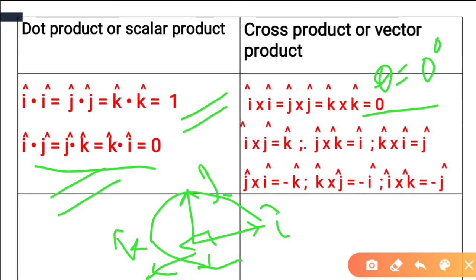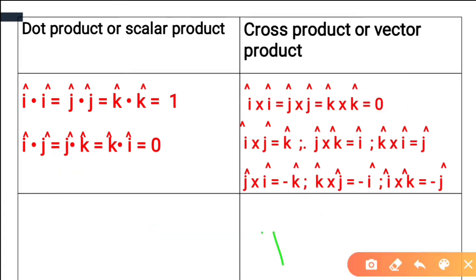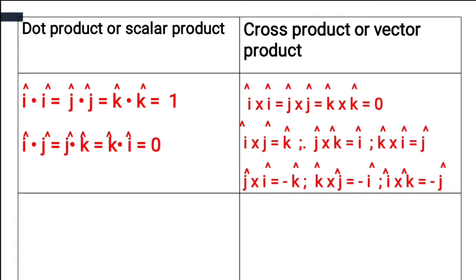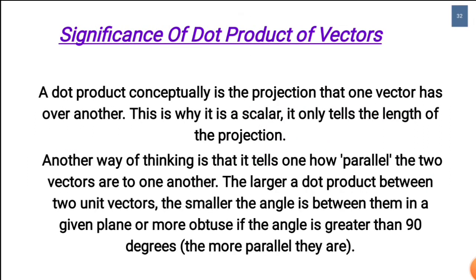For cross products of unit vectors: i×j = k̂, j×k = î, k×i = ĵ. Going anti-clockwise: j×i = −k̂, k×j = −î, and i×k = −ĵ. The cyclic order i, j, k follows the alphabet pattern — going forward gives positive results, going backward gives negative results.